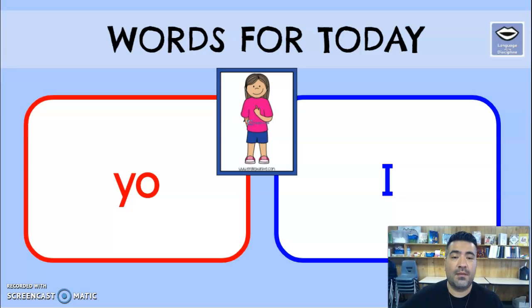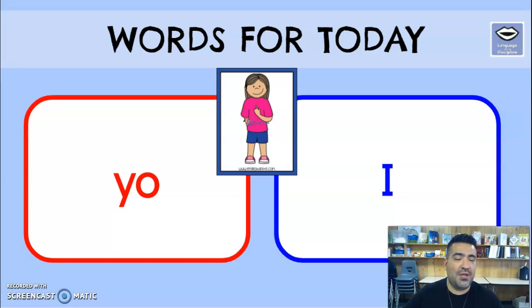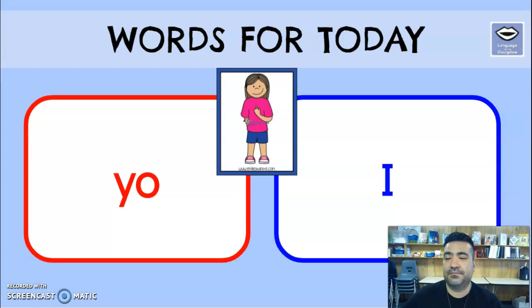Here's the next one: 'Yo.' Repeat it — 'yo.' Very simple. 'Yo' means 'I.' It's not 'yo,' it's 'yo.'